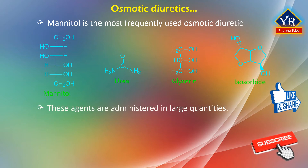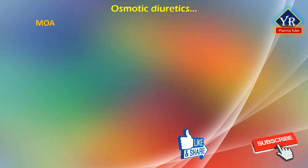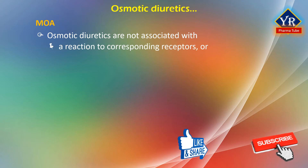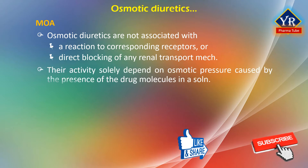These agents are administered in sufficiently large quantities. The osmotic diuretics urea and mannitol are administered intravenously, whereas glycerin and isosorbide are administered orally. Osmotic diuretics are the only group of compounds whose action is not associated with a reaction to corresponding receptors or with direct blocking of any renal transport mechanism.